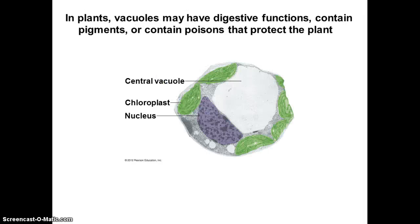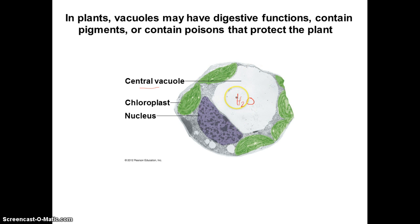In plants, vacuoles have a major function. Here you see a central vacuole, and basically what's in here is water. Water supports that cell and maintains its structure. Some plants might also have food, toxins, or poisons stored in vacuoles that protect the plant.